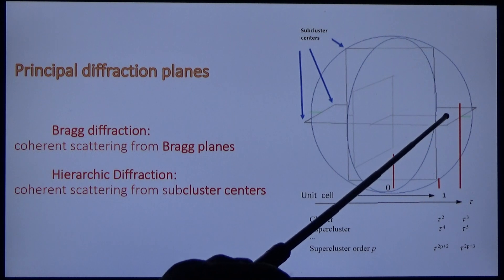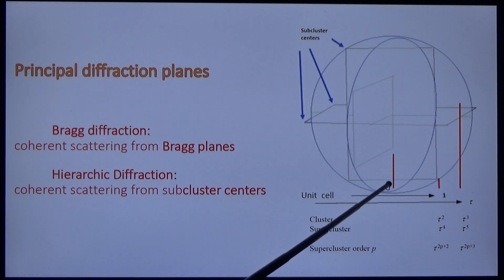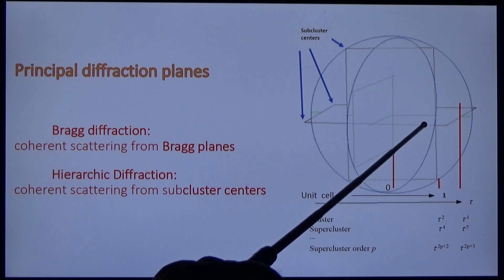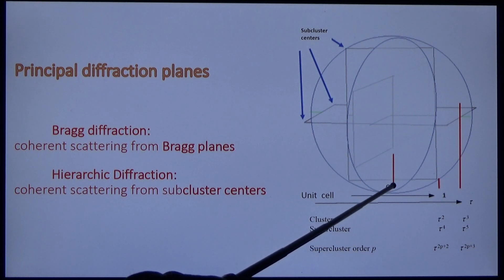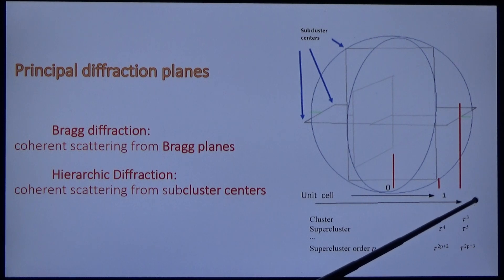Each dimension of the golden triad has three principal planes, and the golden triads scale as unit cell, cluster, supercluster, and higher orders. The interplanar spacings vary as 0, 1, tau, tau squared, tau cubed, tau to the fourth, tau to the fifth. So now you know how that geometric series diffraction originates.